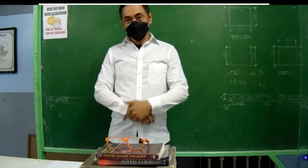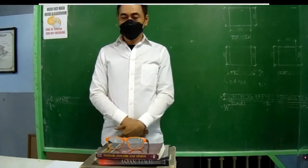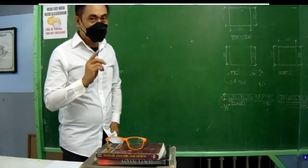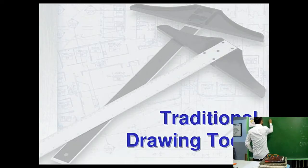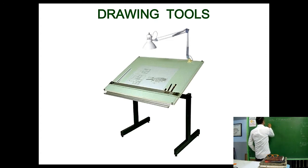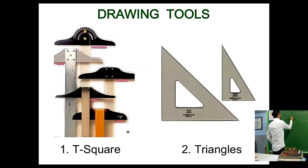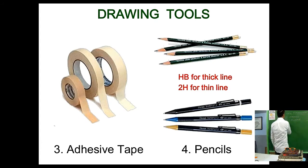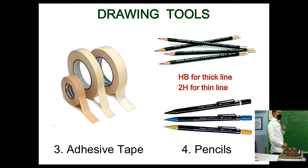These are the traditional tools in Graphics One, which involves manual drawing: the drawing table with a lamp, triangles, and T-squares, pencils — both hard and soft — as well as mechanical pencils and masking or adhesive tapes.